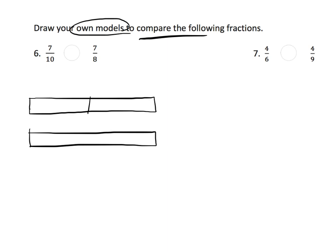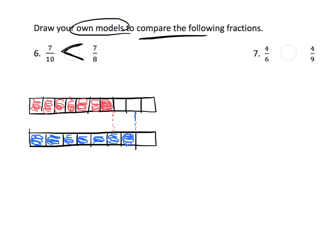I'm going to stick with a couple of tape diagrams. I'll draw two identical tape diagrams — this first one cut into tenths: 1, 2, 3, 4, 5, 6, 7, 8, 9, 10. And then cut the second into eighths. For 7 tenths I'll shade in 7 pieces, and for 7 eighths I'll shade in 7 pieces. We can see that 7 eighths is bigger than 7 tenths. So 7 tenths is less than 7 eighths.